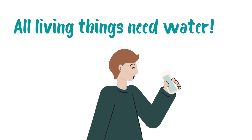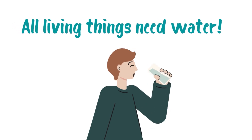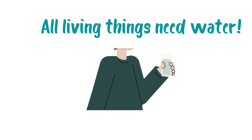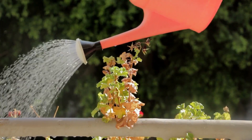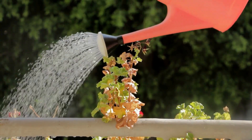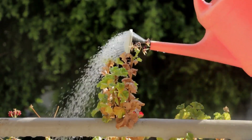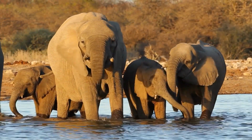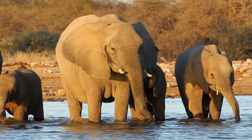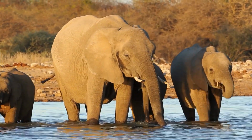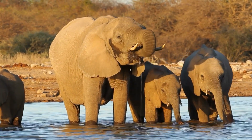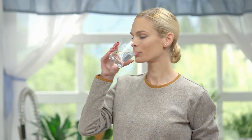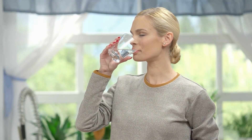All living things need water. For example, a plant needs water to survive. Like all plants, grass is also a living thing — they need water to survive. Here is another example: elephants need water. Like all animals, elephants are living things and need water to survive.